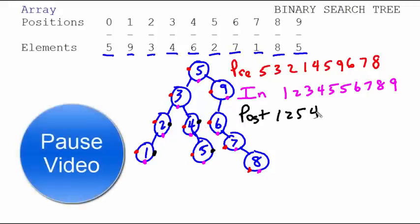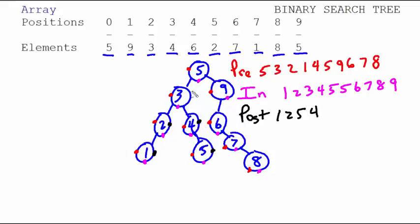Okay, next would be the three. And then you go all the way down here. Remember, you can't cross any branches. And then eight, seven, six, and then nine, and finally five. So that is the postorder traversal when you do a binary search tree.